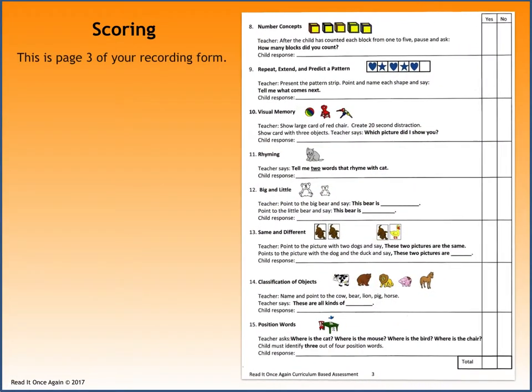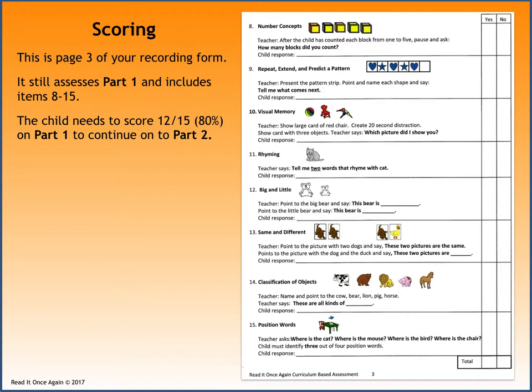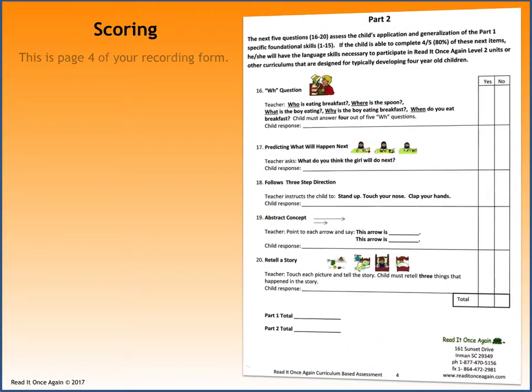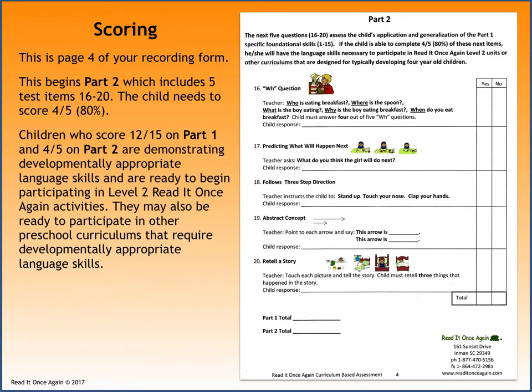Page 3 of the recording form still assesses Part 1 and includes items 8 through 15. The child needs to score 12 of 15, or 80 percent, on Part 1 to continue on to Part 2. Page 4 begins Part 2, which includes 5 tests, items 16 through 20. The child needs to score 4 out of 5, or 80 percent. Children who score 12 of 15 on Part 1 and 4 of 5 on Part 2 are demonstrating developmentally appropriate language skills and are ready to begin participating in Level 2 Read It Once Again activities or other preschool curriculums.